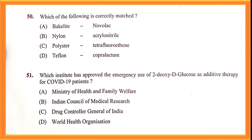Question number fifty: which of the following is correctly matched? Bakelite-novolac is the correct match, because Bakelite is a polymer formed from novolac and phenol. Option A is the correct answer.